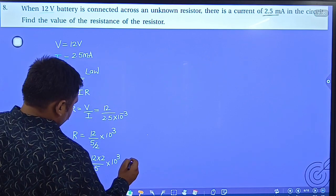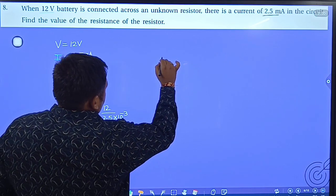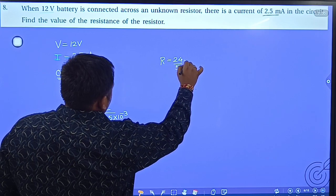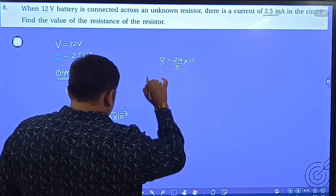So 12 times 2 gives 24 divided by 5 times 10.